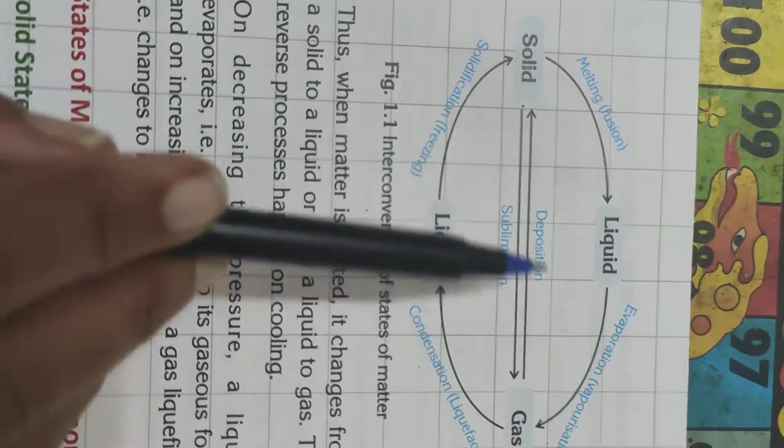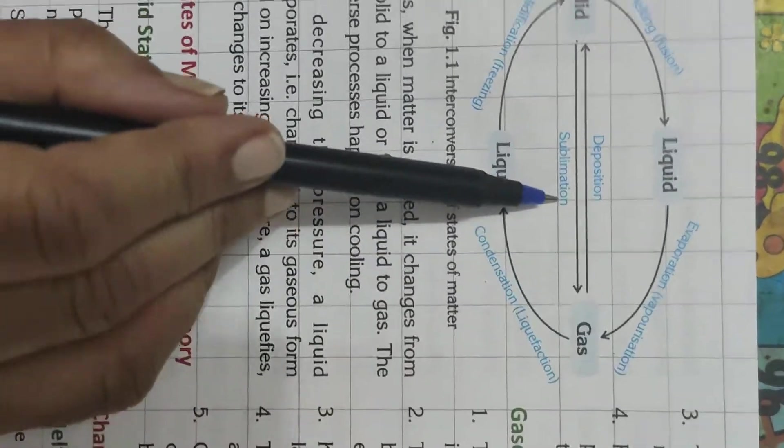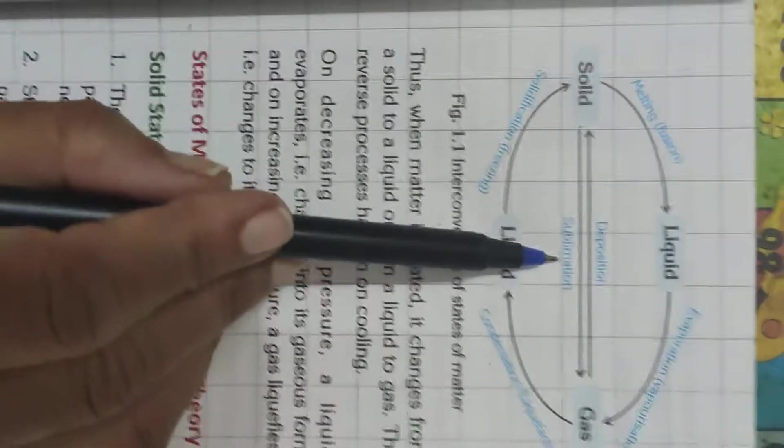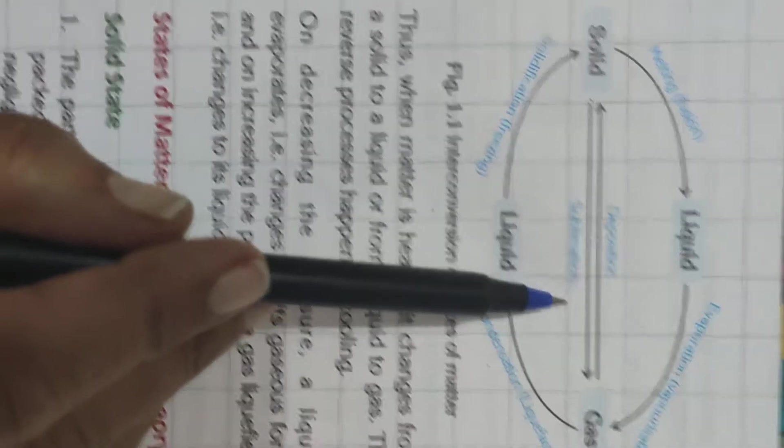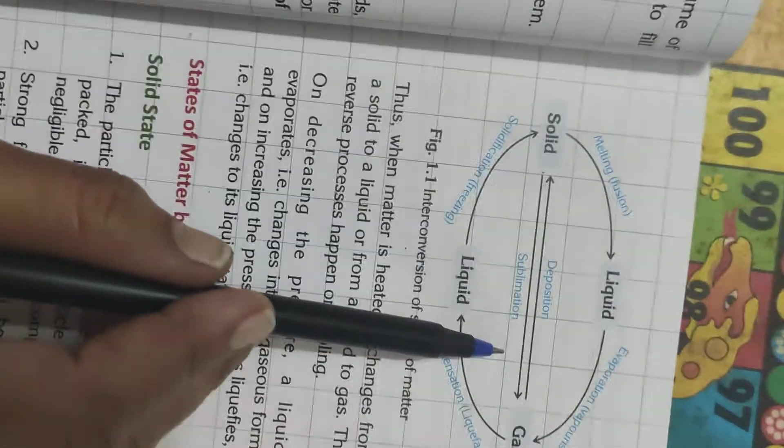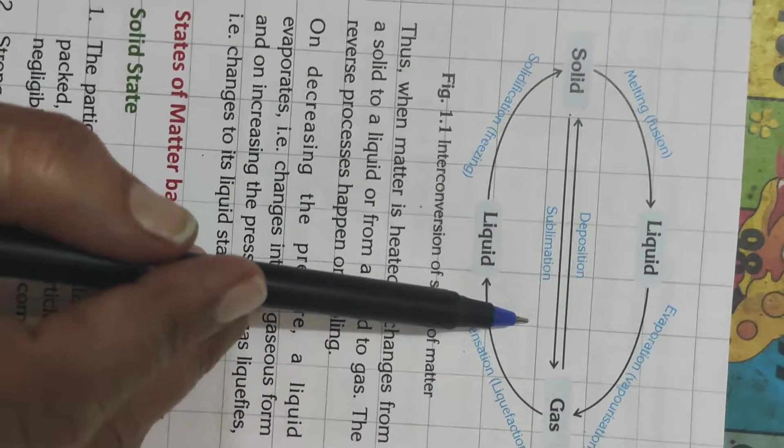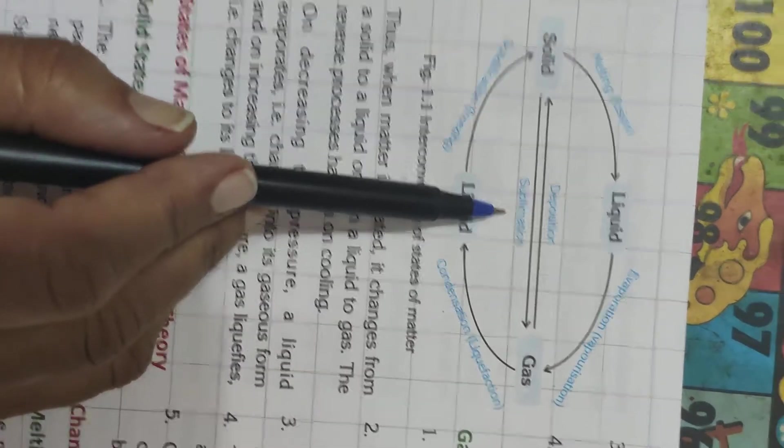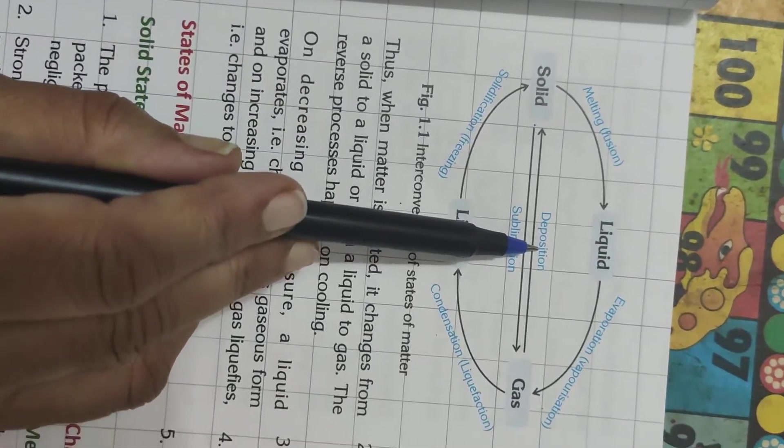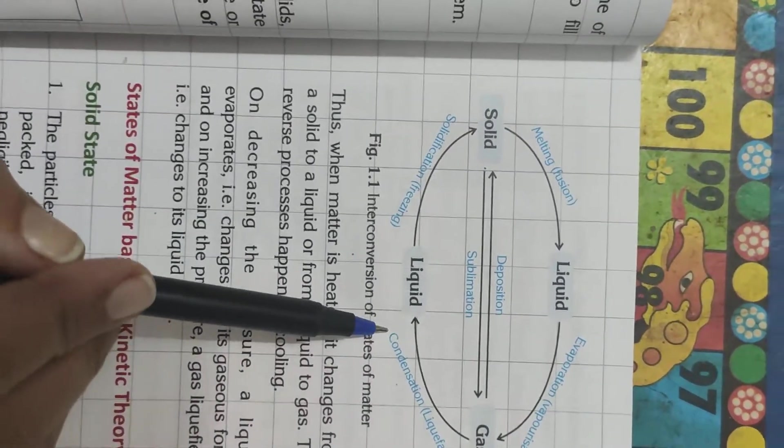Now, there is one more inter-conversion of states of matter. Solid directly changing to gas. This is called sublimation. So, how will you define sublimation? Sublimation is a process in which solid directly changes to gas. This you must have seen camphor. In Hindi, we say kapoor. When it burns, it directly changes to gases. Or naphthalene balls. Ammonium chloride. These are the examples of sublimating substance. And when gas changes to solid, it is called deposition. This diagram is very important. It is given in your question also. You have to draw in your copy.